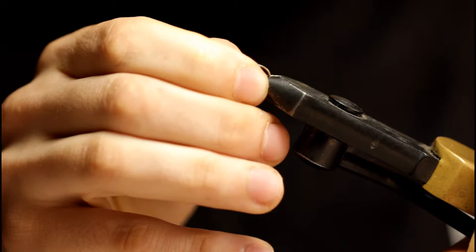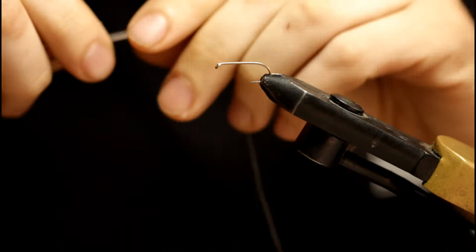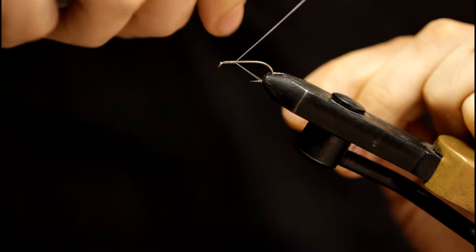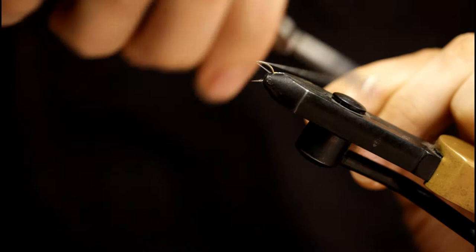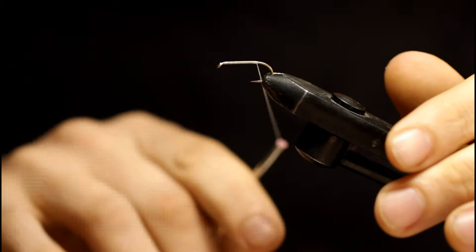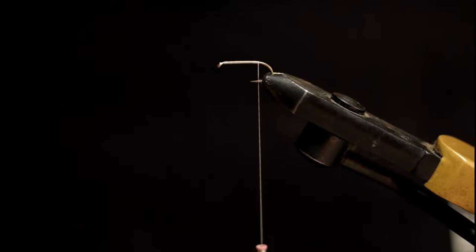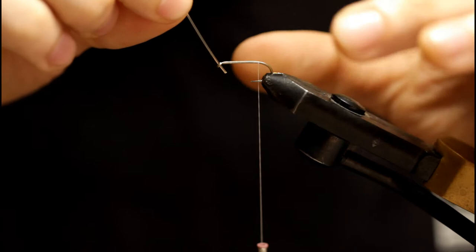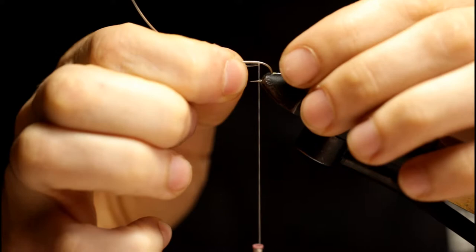I'm going to start by putting the size 8 Nymph Wet Hook in the vise. I'm going to grab my 210 UTC thread in white and build up a nice thread base down the shank of the hook, stopping somewhere in between the barb of the hook and the point of the hook. Let's grab my scissors and snip off the tag. And now I'm going to grab a pre-cut piece of 30 pound test monofilament. This is pre-cut to about 2 and 3 quarters inches. Slide that through the hook eye.